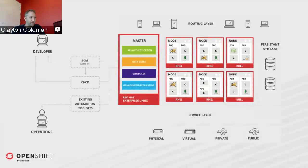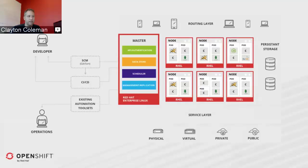OpenShift builds on top of Kubernetes. We make it easy to run Docker containers on machines in a cluster, bring in persistent storage for stateful applications like databases, and support web applications that need access to a file system that lives longer than a container. We offer a service layer that bridges the gap between applications running on and off the cluster, make it easy to expose applications to end consumers, and integrate source code, CI/CD, and existing automation into a flow that works for both developers and operators.